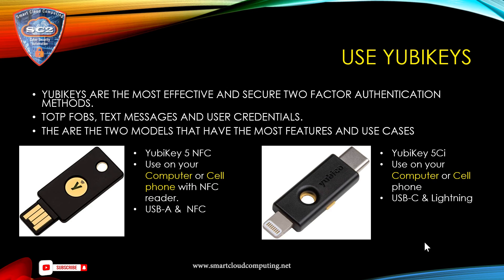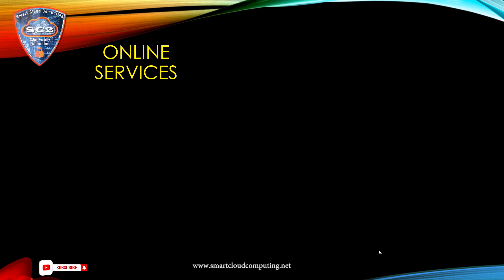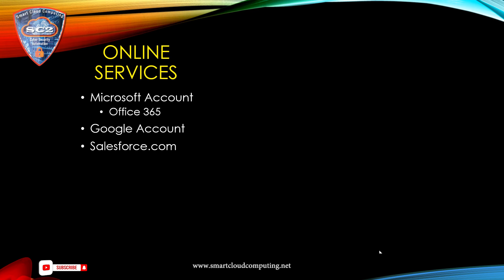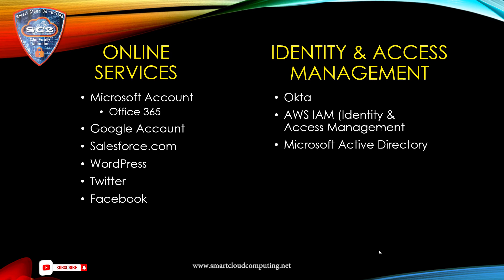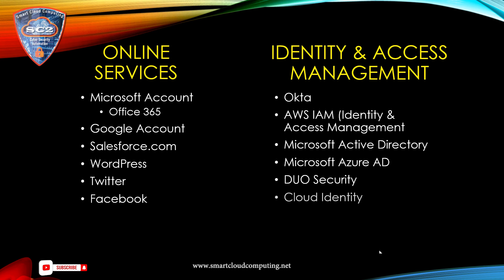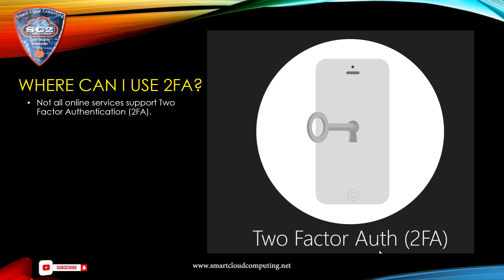A YubiKey is the most effective two-factor authentication method to protect access to your online services and identity and access management services. These are online services that support U2F, meaning you can store the secret key in your YubiKey. You can use it on Microsoft accounts like Office 365, Google, Salesforce.com, WordPress, Twitter, Facebook, and more. Identity and access management services supported include Okta, AWS IAM, Microsoft Active Directory, Microsoft Azure Active Directory, Duo Security, Cloud Identity, and more.